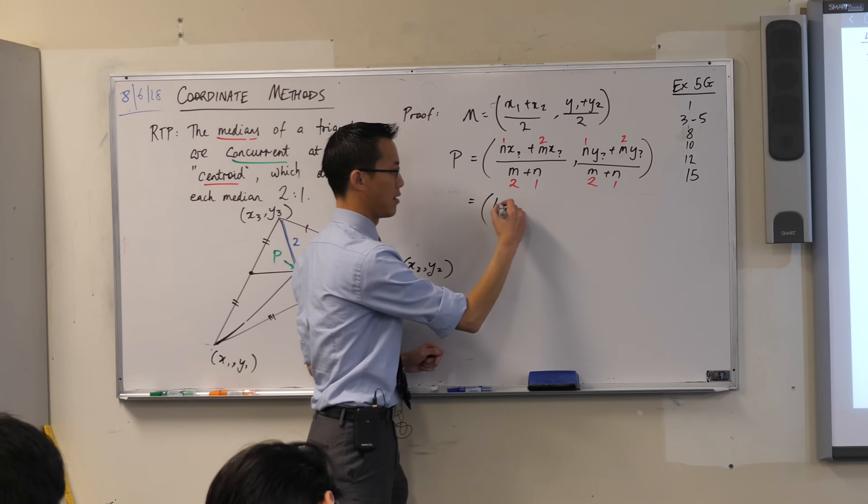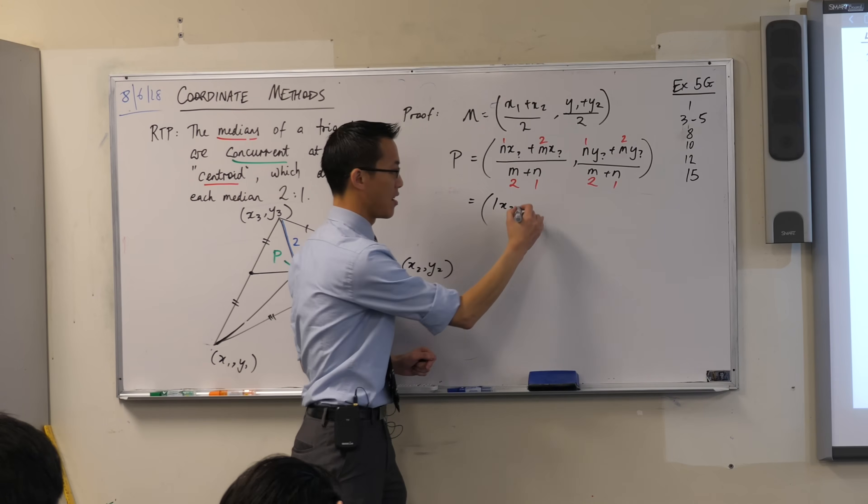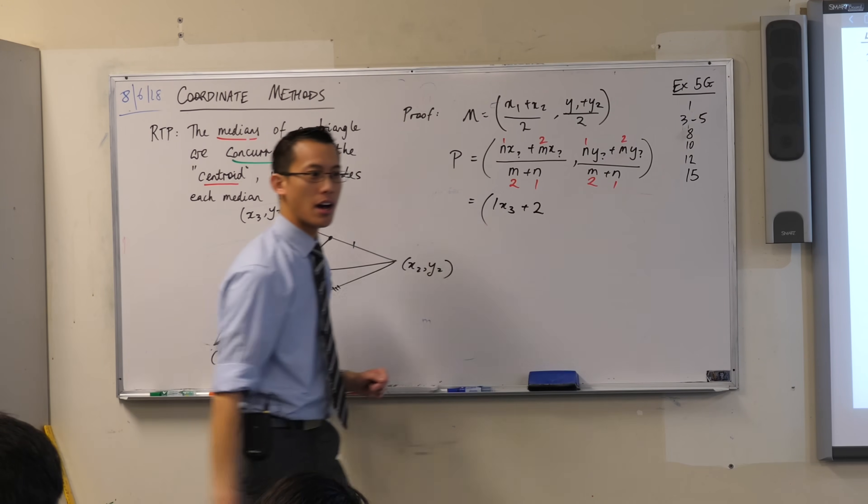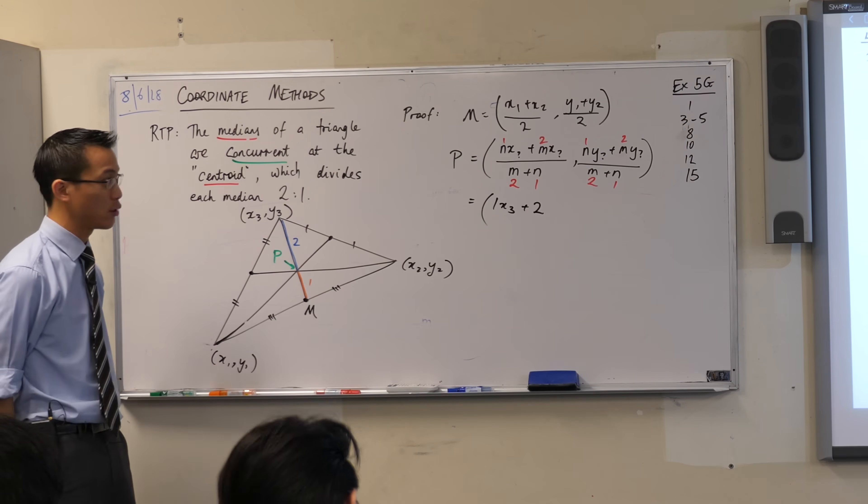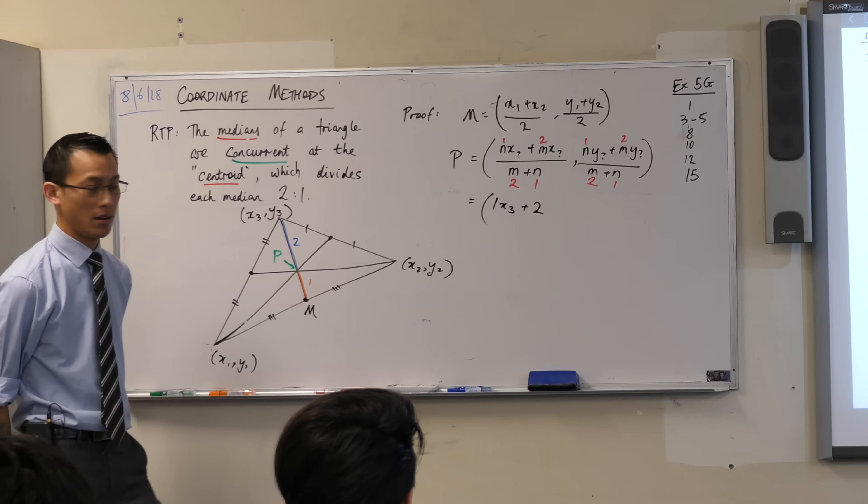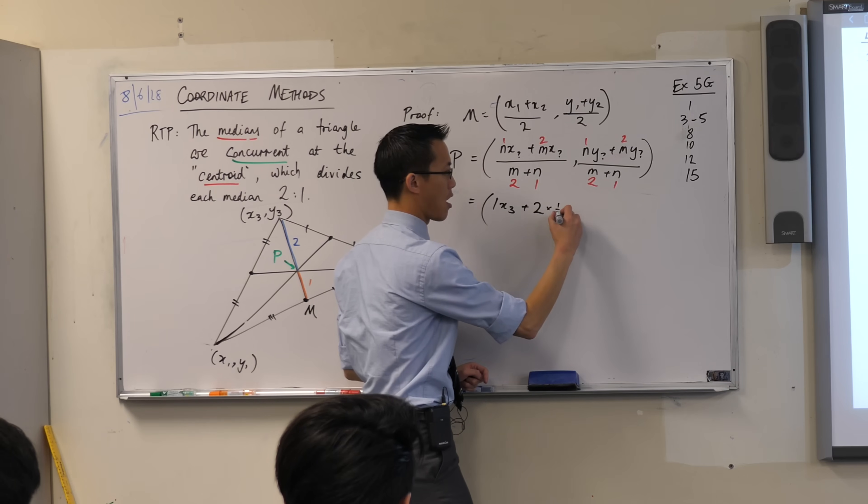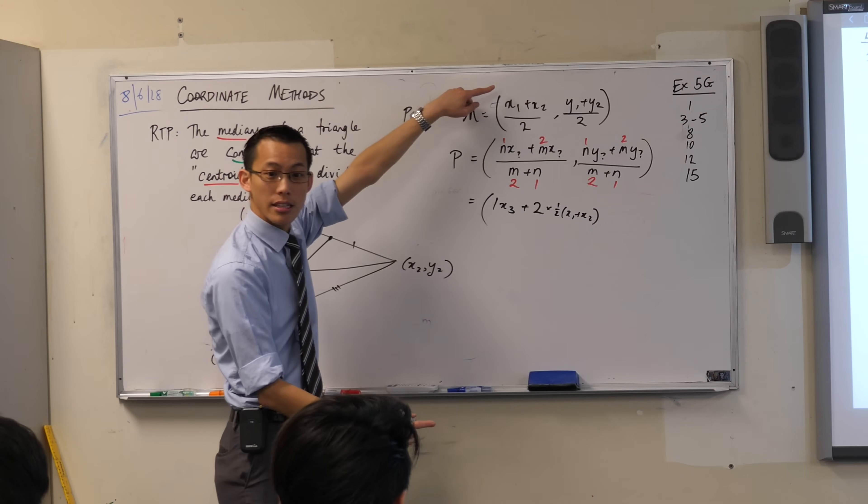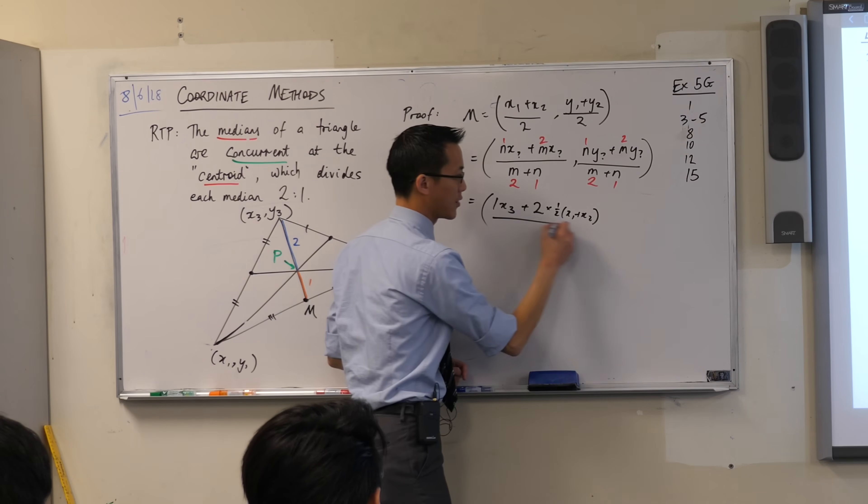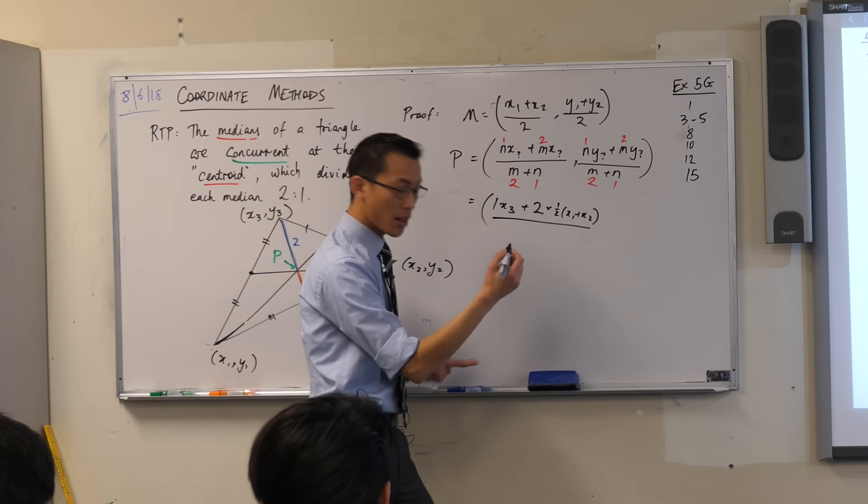So it's 1 times x3 plus 2 times... Now, what's the x-coordinate? Have a look at it. I just wrote it up above, right? It's this guy here? Yes. So I'm going to write that in as half x1 plus x2. Are you okay with that? That's the x-coordinate I get from the midpoint. And I divide that all by 3 in this case. Fantastic.